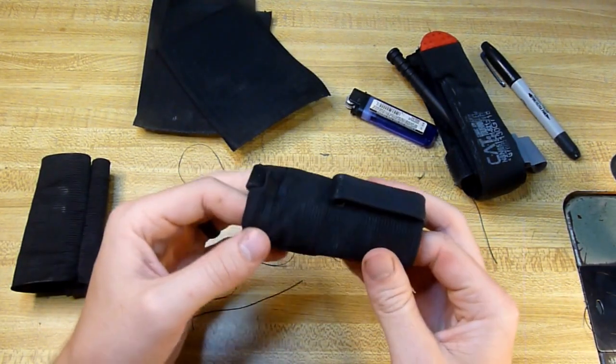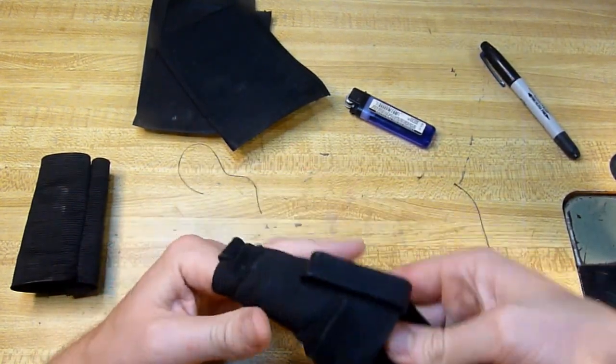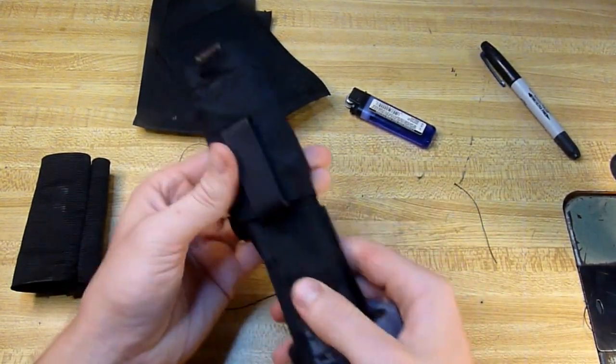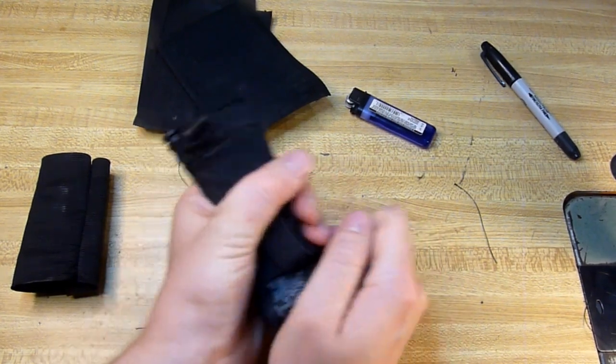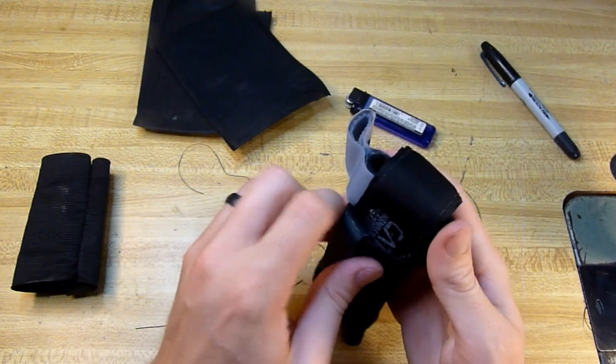And there you go, there's your tourniquet holder. I sized this for CAT tourniquets. If you want to use something other than that, you can just experiment with the length of your elastic to accommodate whatever size tourniquet you want to use.